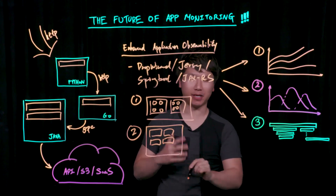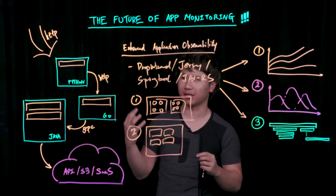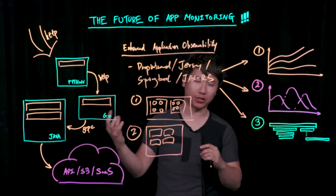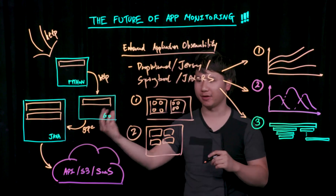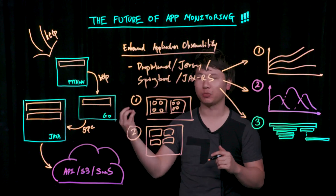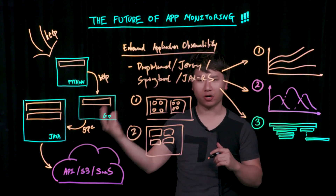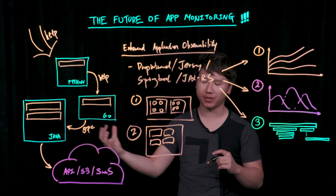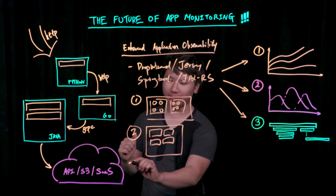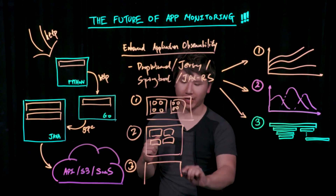We have surfaced the core KPIs that describe the health of a microservice, which includes request rates, error rates, latencies, and payload sizes, as well as runtime information — including, for example in Java, garbage collection rates, file handles, and all that kind of stuff. And then finally, allowing you to drill through to traces.